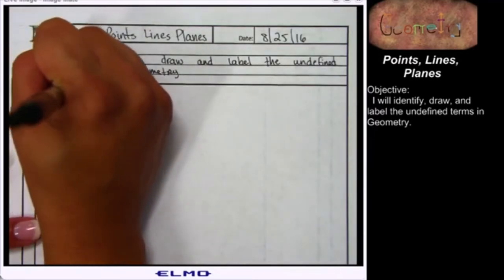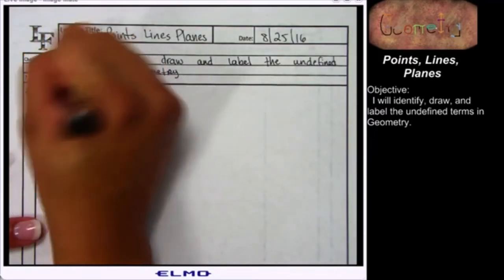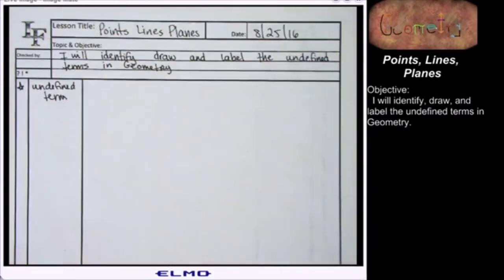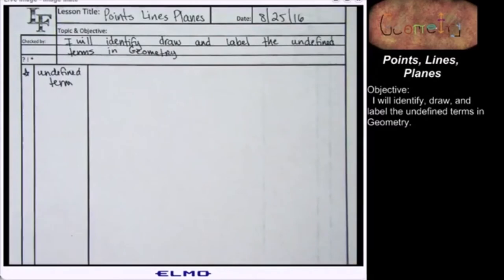So to start, we need to figure out what on earth an unidentified—I'm sorry, an undefined term is. My brain went to UFOs, I'm sorry. We need to figure out what an undefined term is.